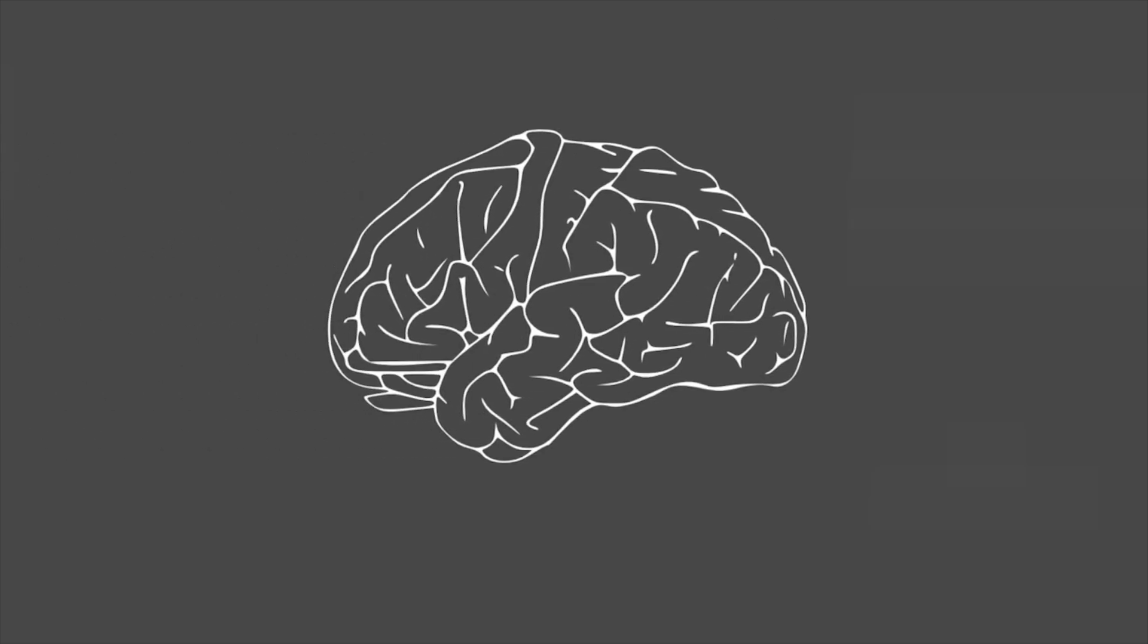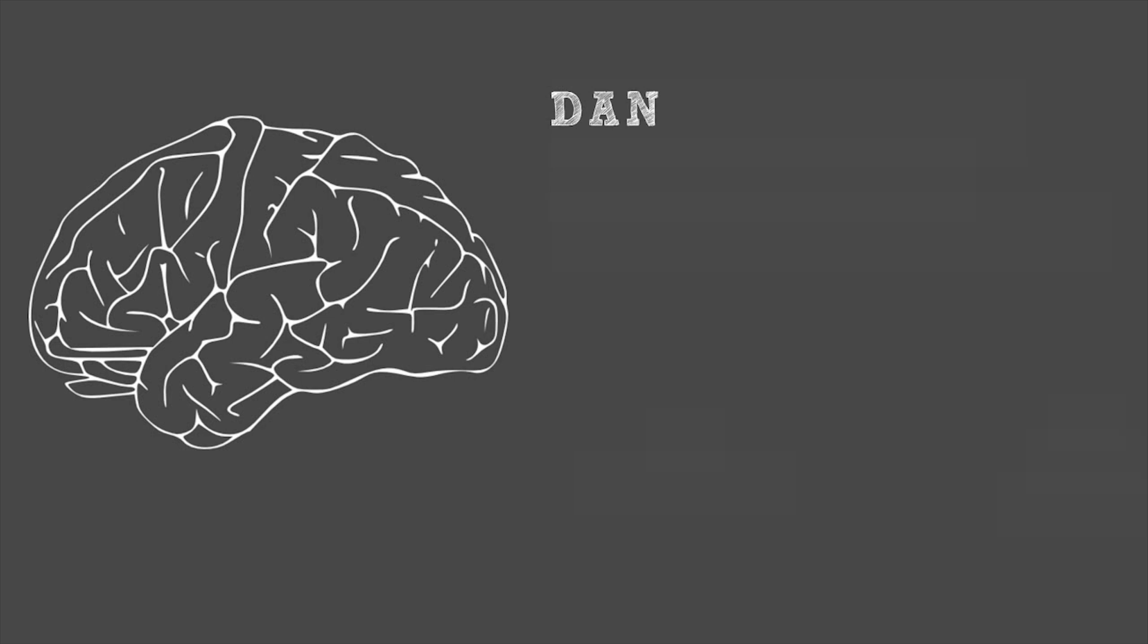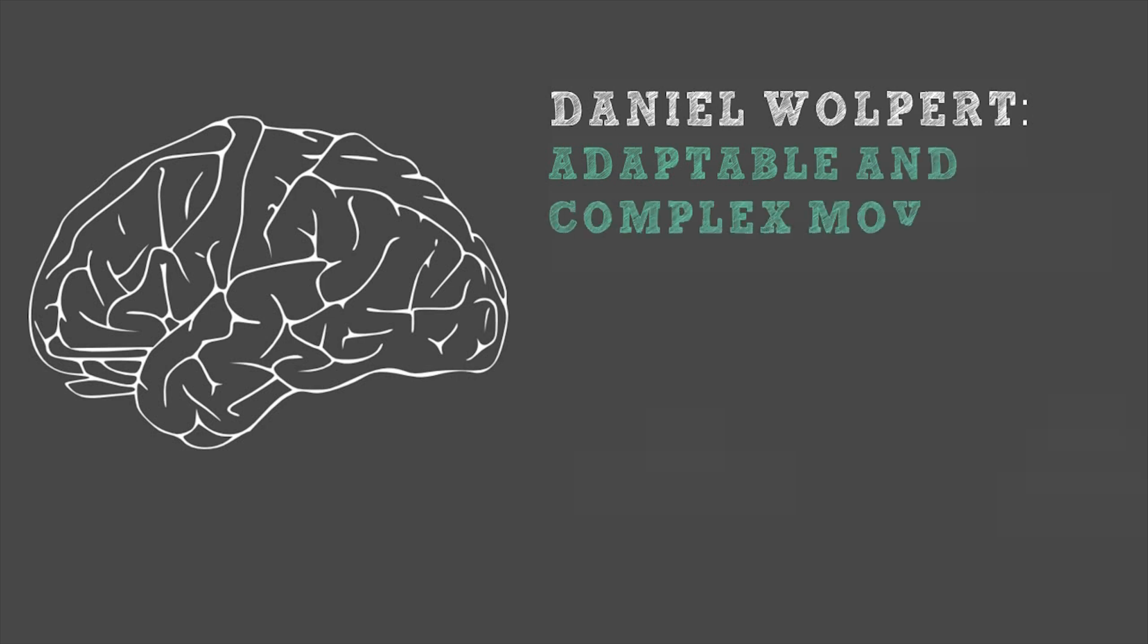So what is the brain for anyway? You may think it's about solving math problems or creating a new smartphone app that'll make you a millionaire. But neuroscientist Daniel Wolpert says that our brain is for one thing only: to produce adaptable and complex movement. That's it.